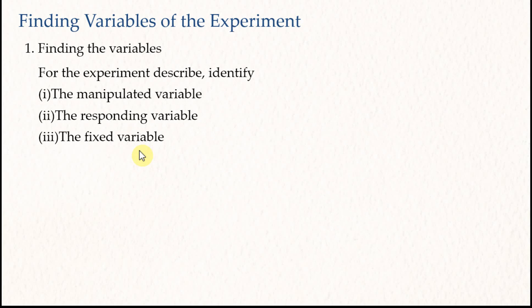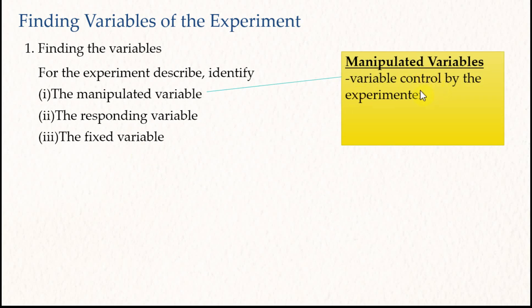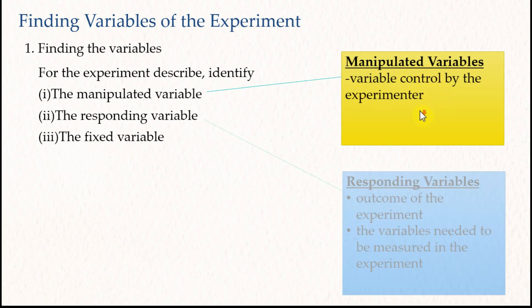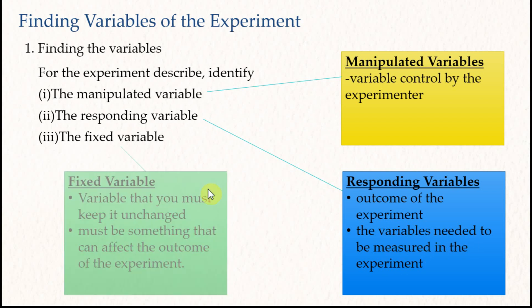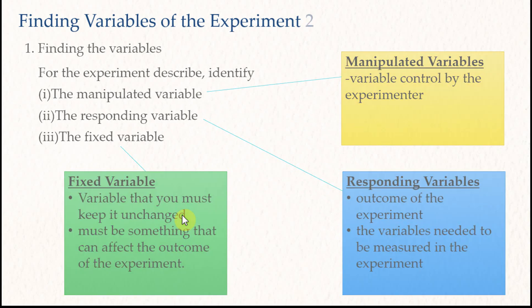Most students will have no problems to answer these questions. The manipulated variable is the variable controlled by the experimenter. The responding variable is the outcome of the experiment. It is the variable needed to be measured in the experiment. And the fixed variable or the constant variable is the variable that you must keep it unchanged, and it must be something that can affect the outcome of the experiment. Usually, the manipulated variable and the responding variable can be identified easily from the questions.